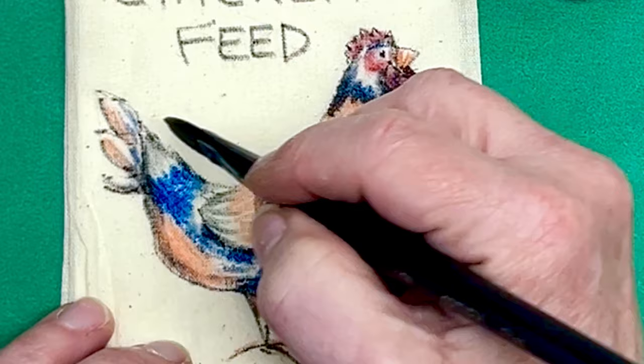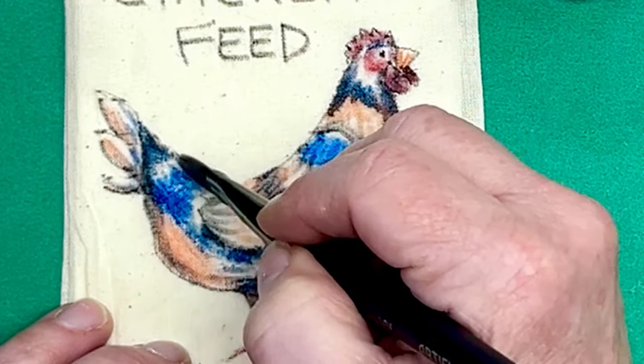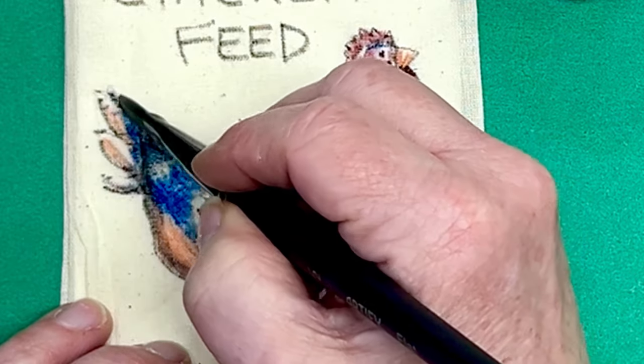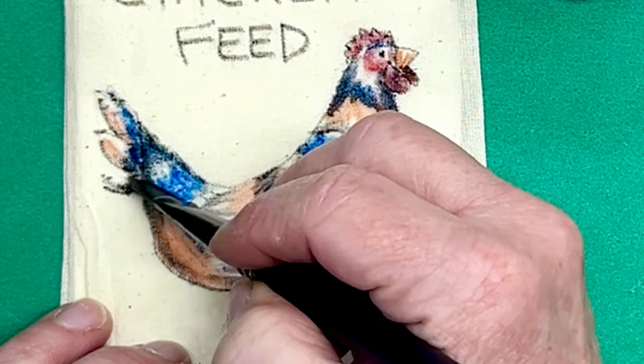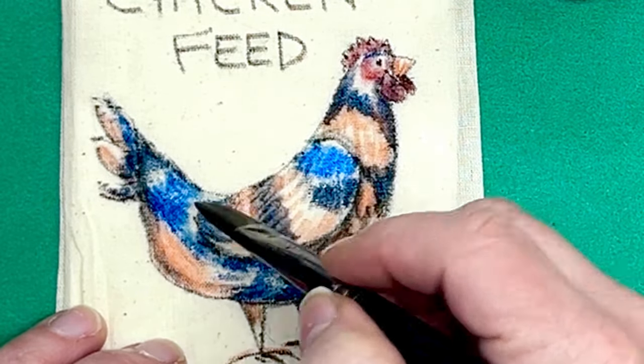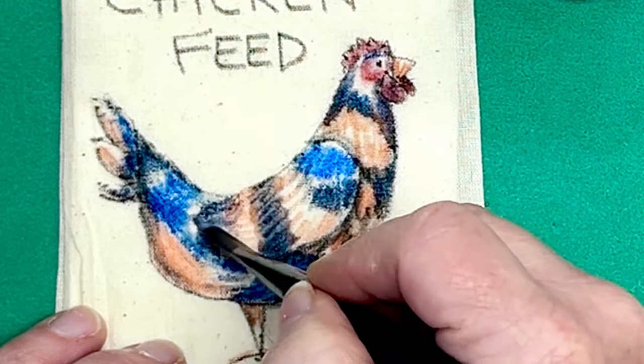I'm leaving some white here and there. I'm not coloring it all in. I'm letting some of the fabric show. Come back here and get the end of that wing there.